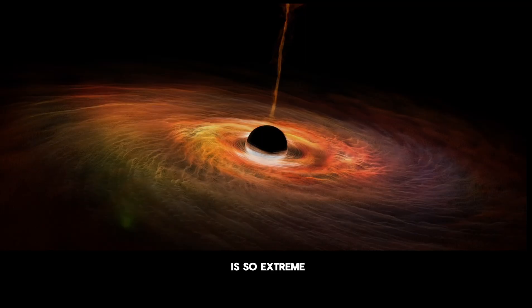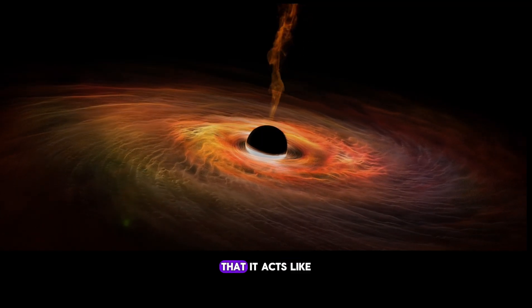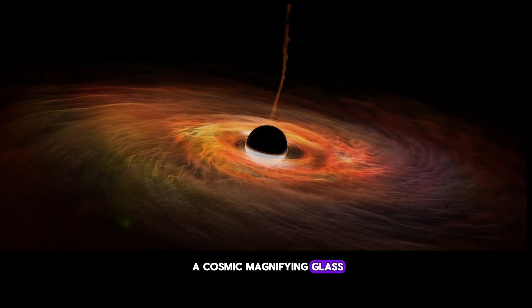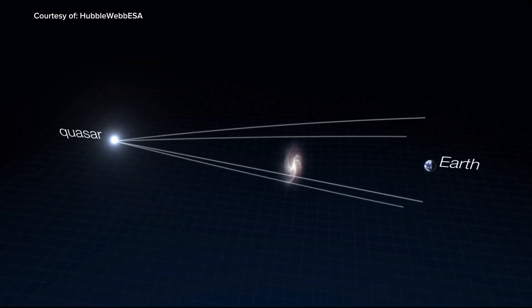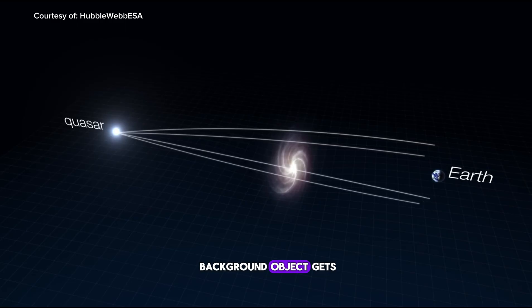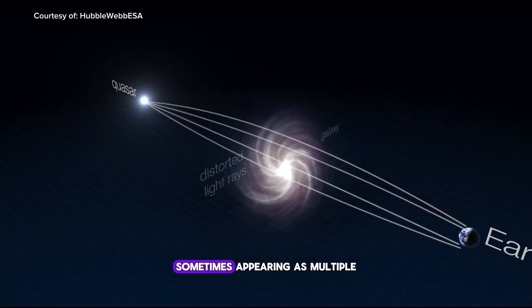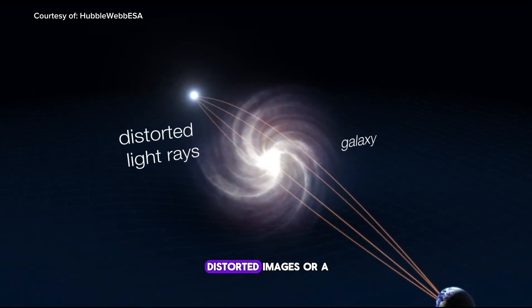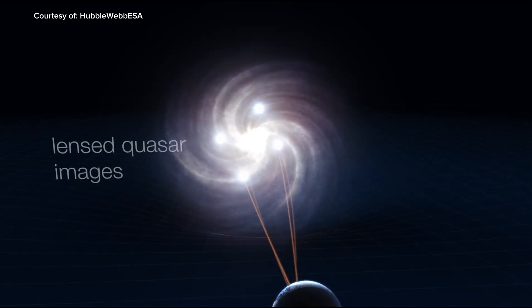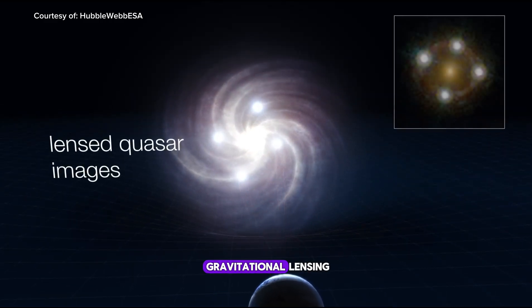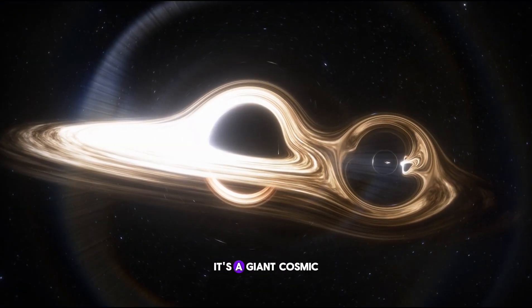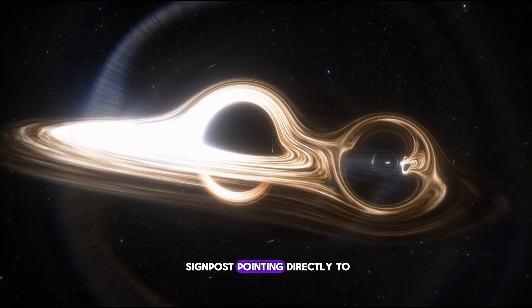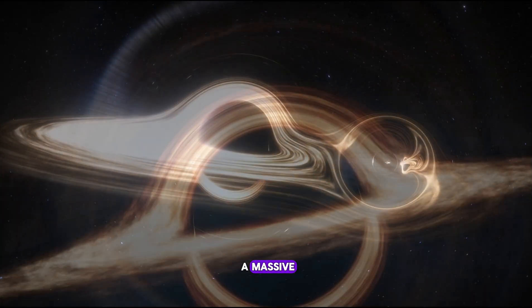A black hole's gravity is so extreme that it acts like a cosmic magnifying glass. When a black hole passes in front of a distant star or galaxy, the light from that background object gets bent and magnified, sometimes appearing as multiple distorted images or a bright ring. This effect is called gravitational lensing. When we see light from the distant universe being warped in this specific way, it's a giant, cosmic signpost pointing directly to a massive, invisible object.